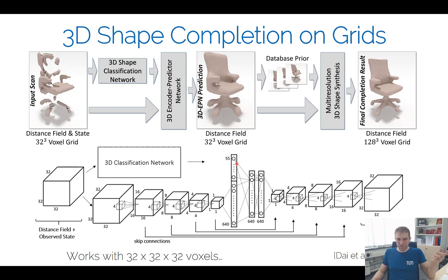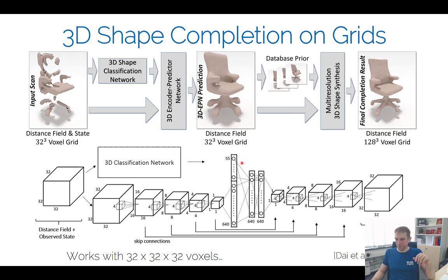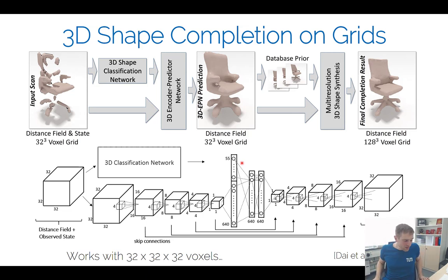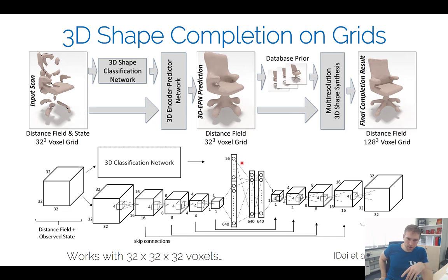An interesting finding is you can combine completion features from the encoder-decoder with a 3D classifier. The classifier didn't help the completion much, but the other direction helped a lot — using completion features for classification makes the classifier significantly better. So classifiers benefit a lot from completion, because you're learning 3D structures and that leads to better classification results.